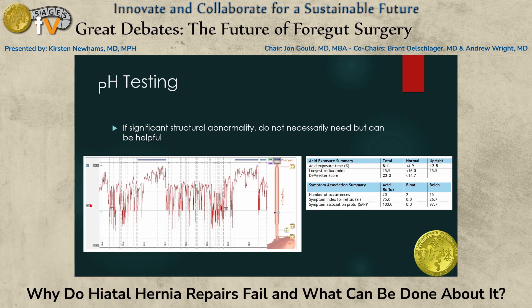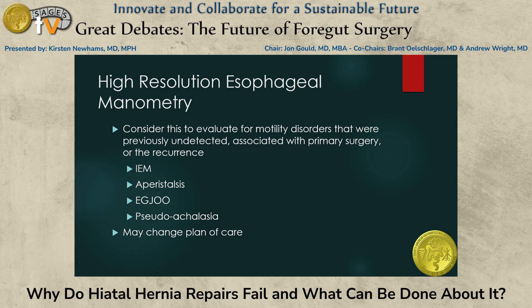This can be very helpful information. pH testing is helpful especially if there are no clear structural abnormalities noted. High-resolution esophageal manometry is elucidating — you may find pseudoachalasia, ineffective esophageal motility, or a hypercontractile esophagus. These findings can guide repair options and also put patient symptoms in context.